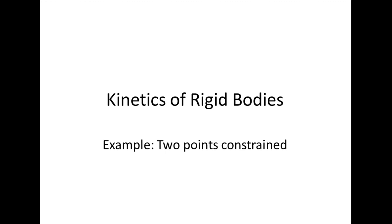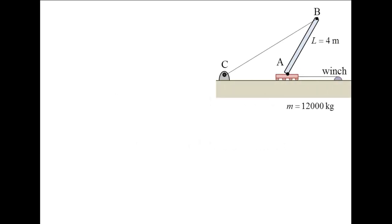In this example, we will examine a rigid body problem in which two points on the body are constrained to move in a certain direction. A slender, uniform concrete slab with a mass of 12,000 kg and a length of 4 m is slowly hoisted by a winch that is connected to a dolly.